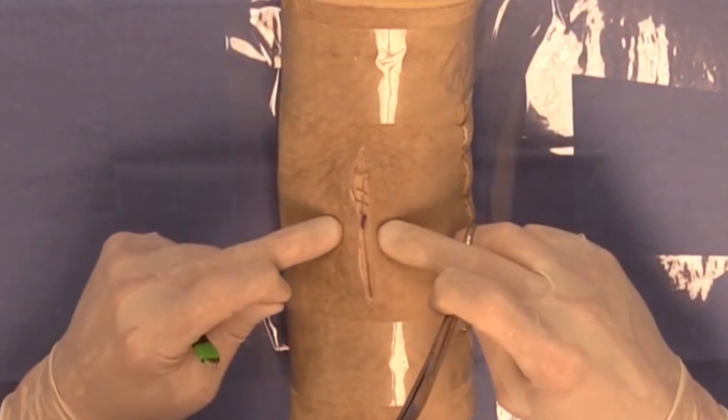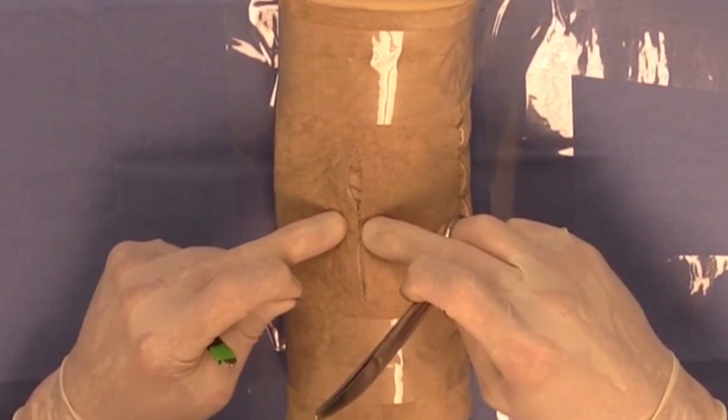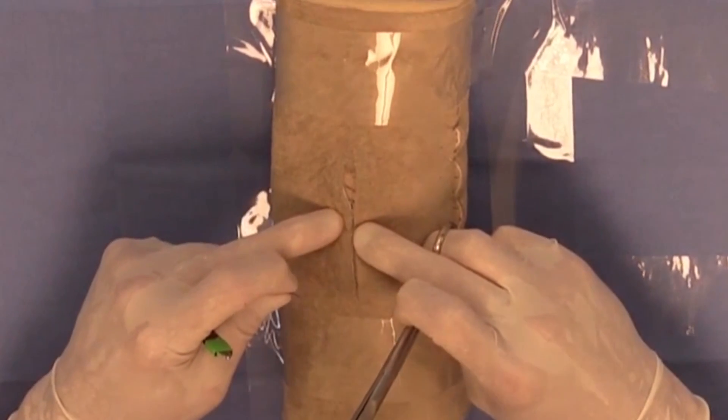Thus when you go ahead and create your skin suture you'll properly bury the knot of your simple continuous subcutaneous closure.